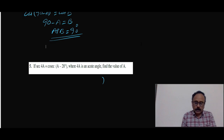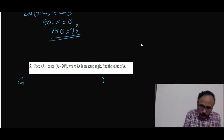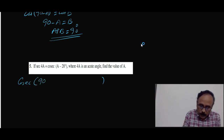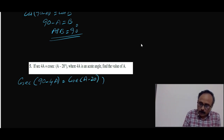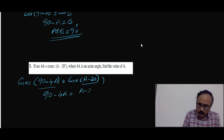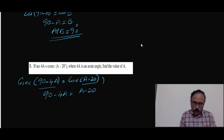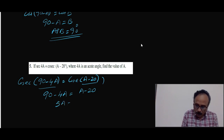Now the fifth problem — we use the same concept that secant and cosecant are complementaries. sec 4A can be written as cosec(90 minus 4A) = cosec(A minus 20). Comparing the angles: 90 minus 4A = A minus 20. Rearranging, 5A = 110, therefore A = 22 degrees.